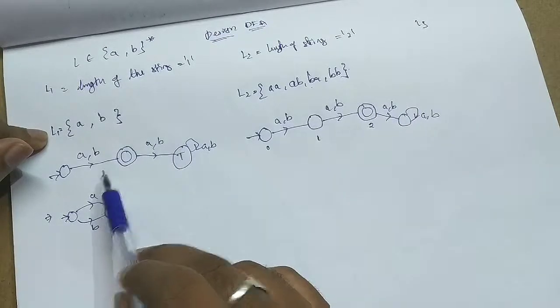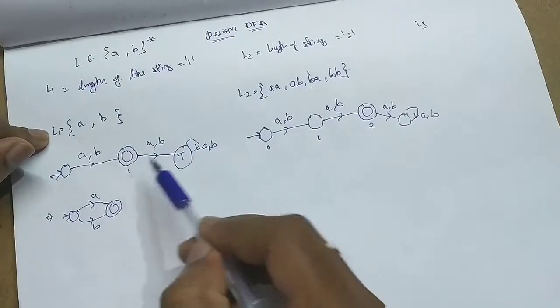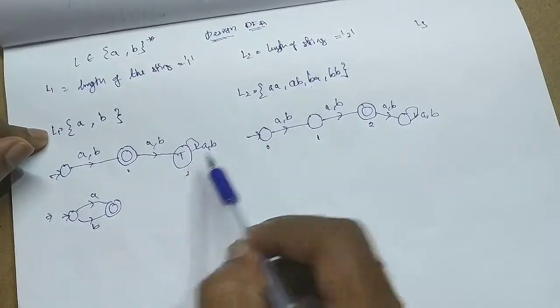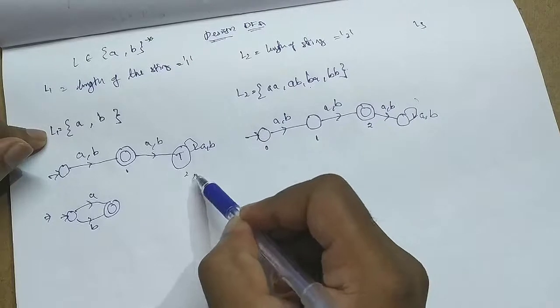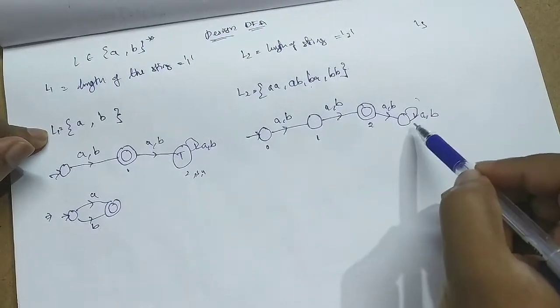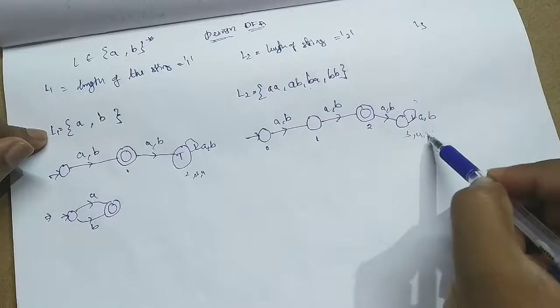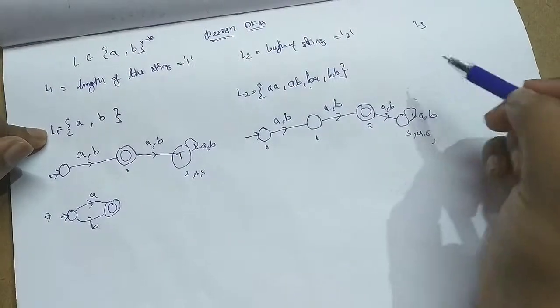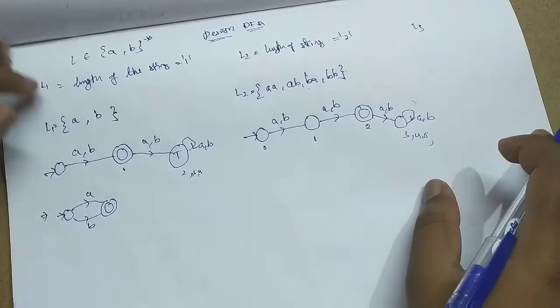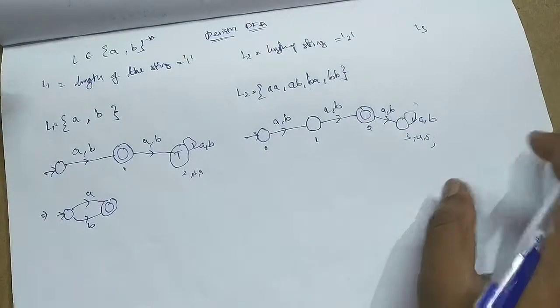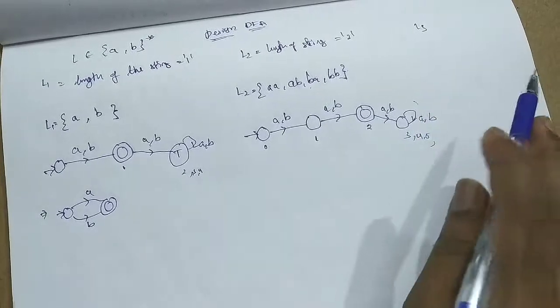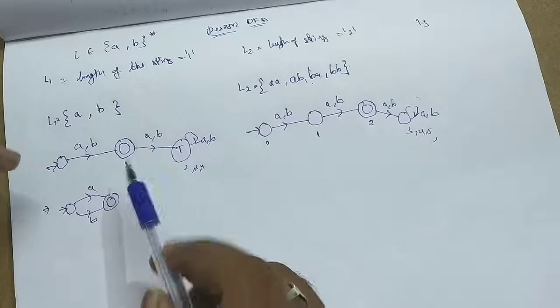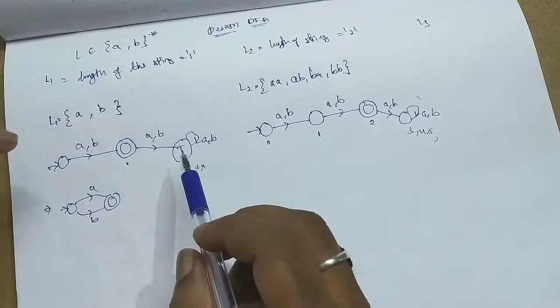It is same, similar. Again, length 1 accept, length 2 accept, length 3, 4. Similarly you can draw for the length 3. It is very simple. Let's take a pen and paper and draw it, you can draw it.